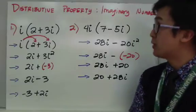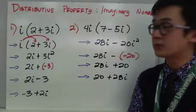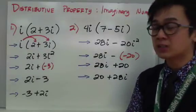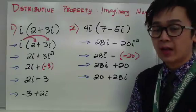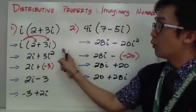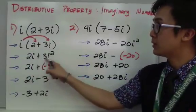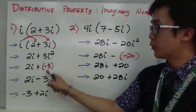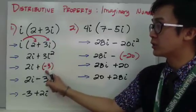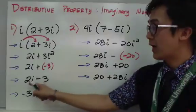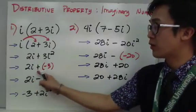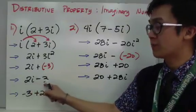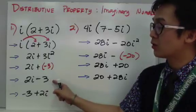Now the distributive property with imaginary numbers. We have a complex number multiplied by an imaginary number. For example 1, we have i times the quantity 2 plus 3i. Using the distributive property, we get 2i plus 3i squared. Since i squared equals negative 1, we change 3i squared into negative 3, giving us 2i plus negative 3, which is 2i minus 3.